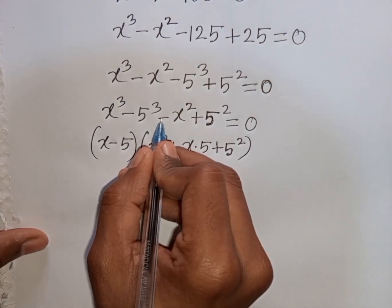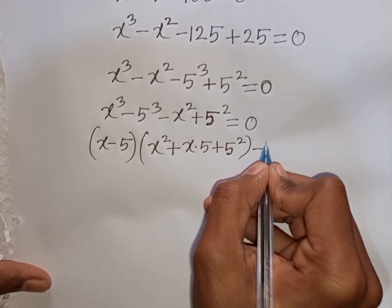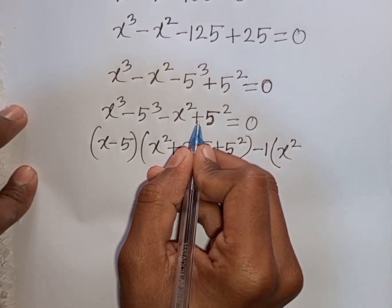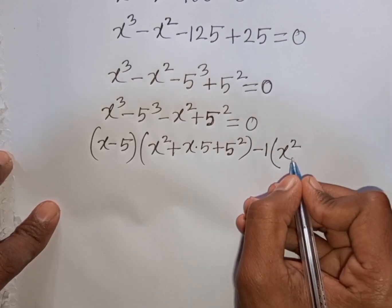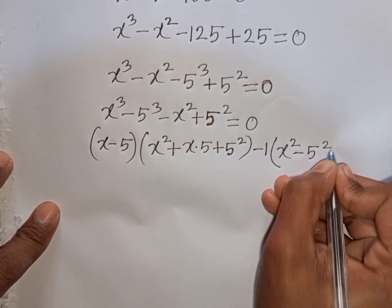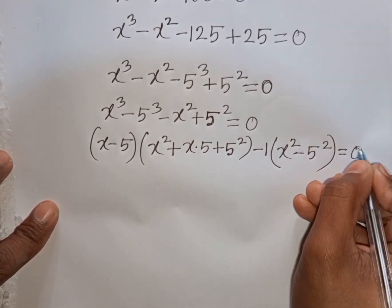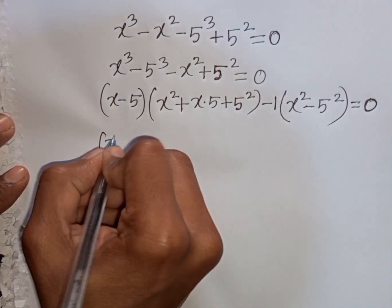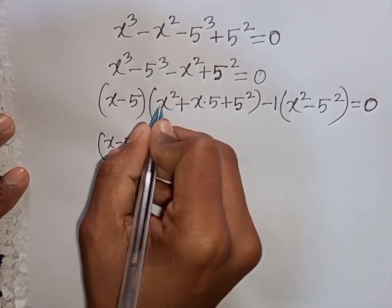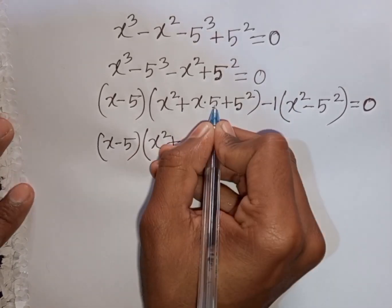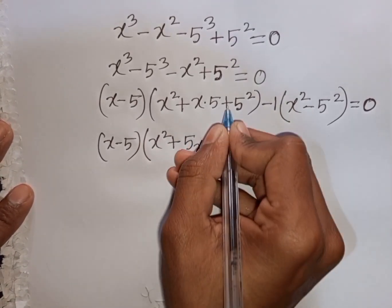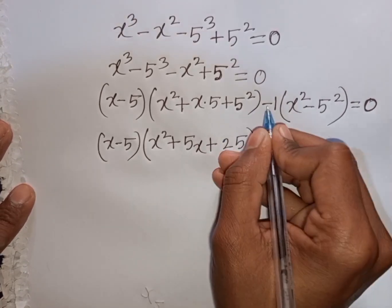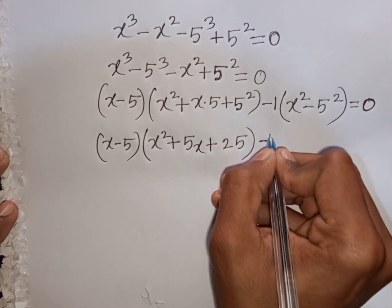Then from here I take common minus 1. So minus 1 is out of the bracket. This divided by this — that means it will be x square. Then plus 5 square divided by minus 1, that means it will be minus 5 square. Then bracket close is equal to 0. Now we have bracket x minus 5 times x square plus x times 5, that means 5x, plus 5 square which is 25, then bracket close.